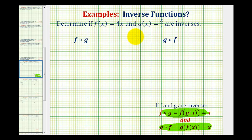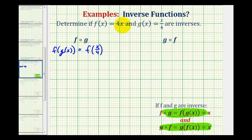So let's go ahead and verify this. For f of g, we'll write f of g of x. Notice the inner function is g of x, which is equal to x divided by four. So this is equal to f of x divided by four. This will be the input into function f, where f is equal to four times x. So this will be equal to four times x divided by four. Notice these two fours would simplify to one.